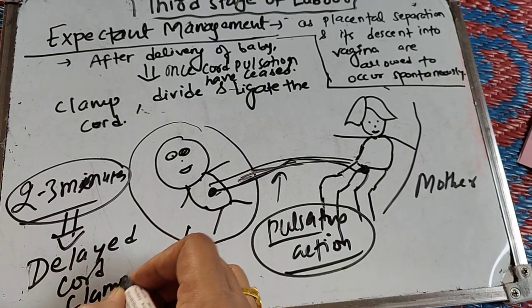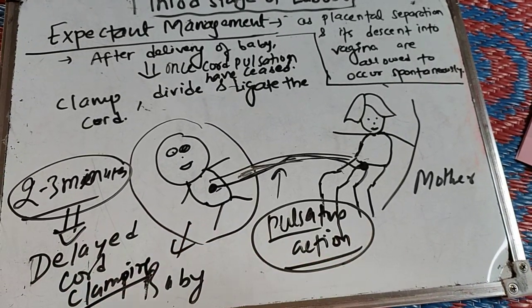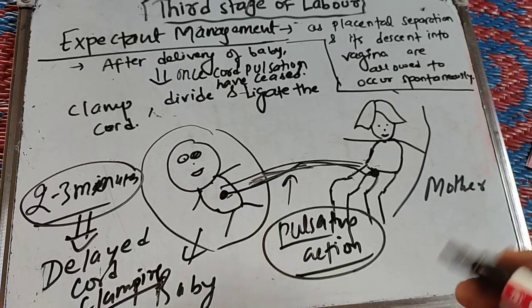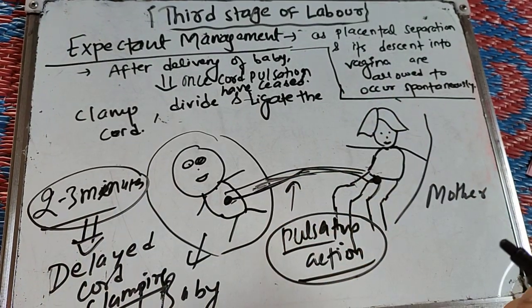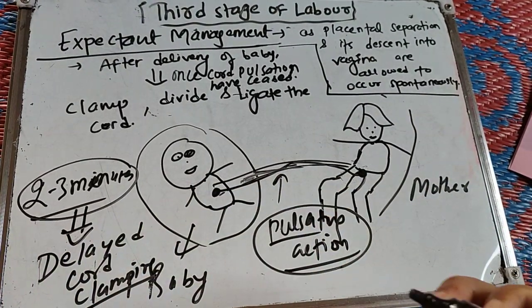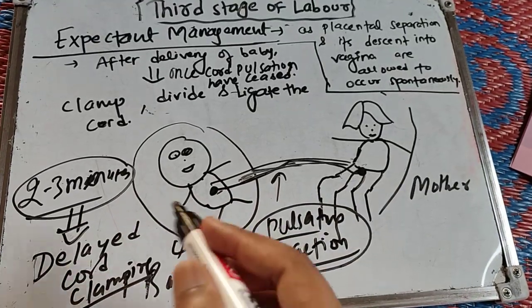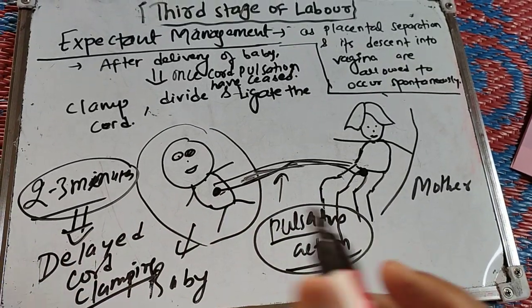Waiting 2 to 3 minutes before clamping the cord after the delivery of the baby is called delayed cord clamping. This is important both for the fetus and the mother, as blood is still passing from the placenta through the cord to the fetus and baby.